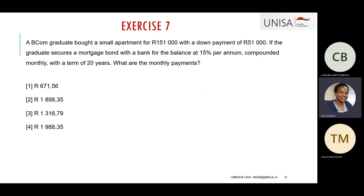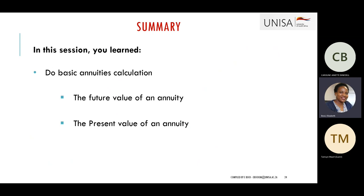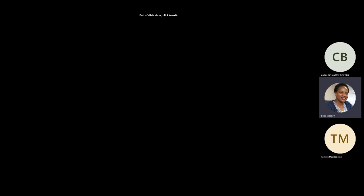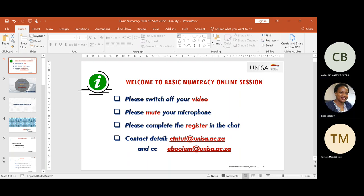There are also exercises six and seven, which come from your assignment — you can go through those again to check if you are getting the right answers now. In conclusion, we have learned how to do basic calculations for the future value of an annuity and the present value of an annuity. I will see you next week. Have a lovely evening, please remember to complete the register, and bye!